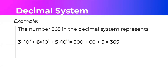For example, the number 365 in the decimal system represents 3 times 10 raised to 2, plus 6 times 10 raised to 1, plus 5 times 10 raised to 0. Any number raised to 0 is equal to 1, so 5 times 1 is 5. Then 10 raised to 1 is 10 times 6, giving us 60. Then 10 raised to 2 is 100 times 3, that is 300. We add everything up and we have 365.